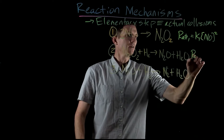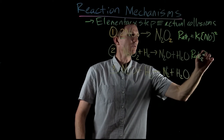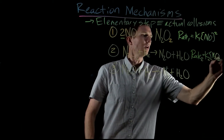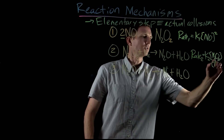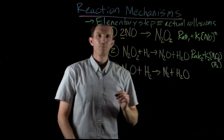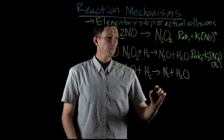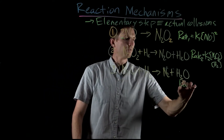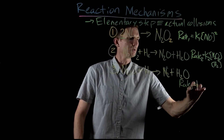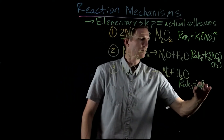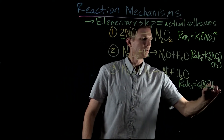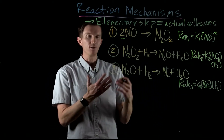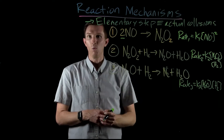We can do the same for the other steps. Rate two equals K2 times the concentration of N2O2 times the concentration of H2. And our third rate law expression: rate three equals K3 times the concentration of N2O times the concentration of H2. Both of those are first order because the coefficient in front of each is 1.